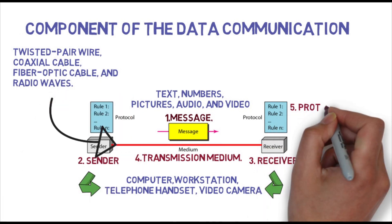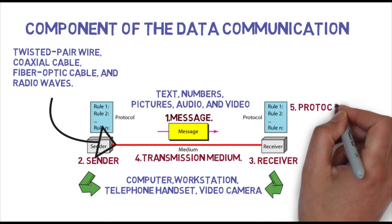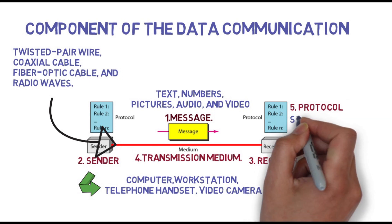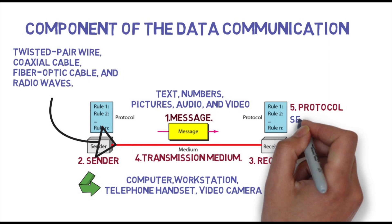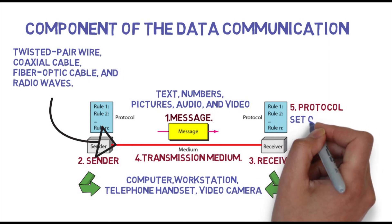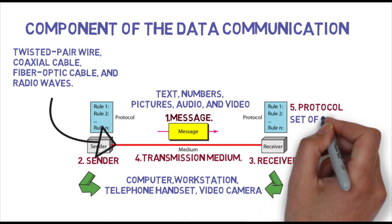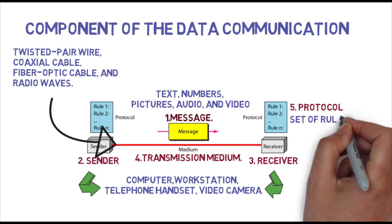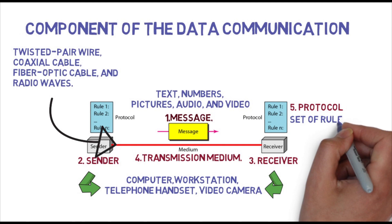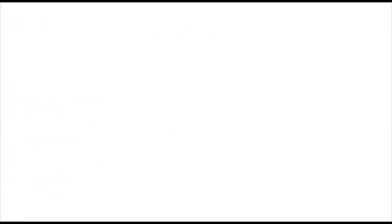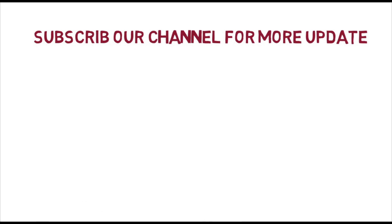Fifth: protocol. A protocol is a set of rules that govern data communications. It represents an agreement between the communicating devices. Without a protocol, two devices may be connected but not communicating — just as a person speaking French cannot be understood by a person who speaks only Japanese.